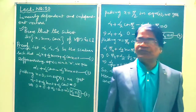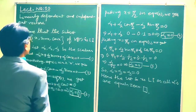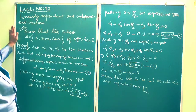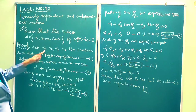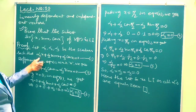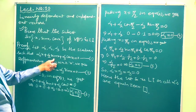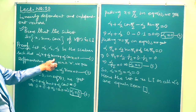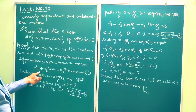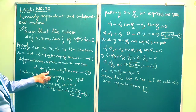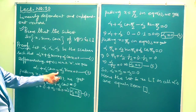So here the question is: prove that the subset S = {x, sin x, cos x} of V(F) is linearly independent. In order to prove this, let α1, α2, α3 be scalars such that α1·x + α2·sin x + α3·cos x = 0. Now differentiating equation 1 we get α1 + α2·cos x − α3·sin x = 0. This is equation 2.